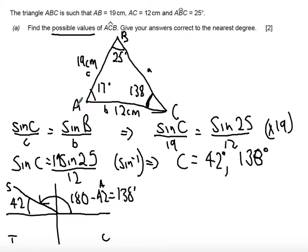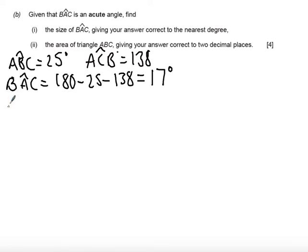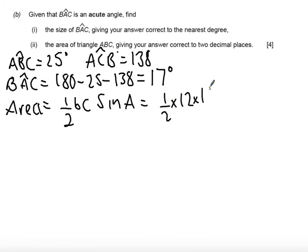Now what we need to know is we need to know two sides for that triangle. So the only two sides I know are 12 and 19. So I'm going to do a half times 12 times 19. And then the sine of the angle between them. So what we're going to be using area equals a half BC sine A. Which is a half times 12 times 19 times sine of 17 degrees.